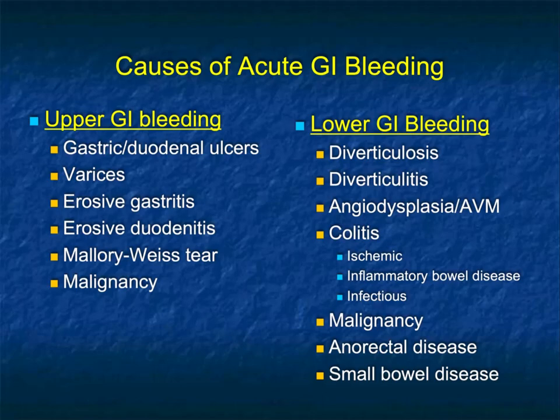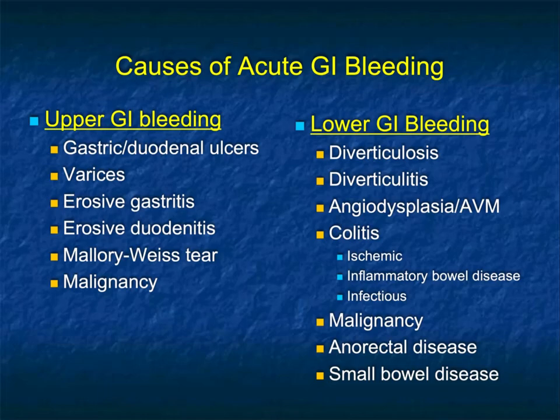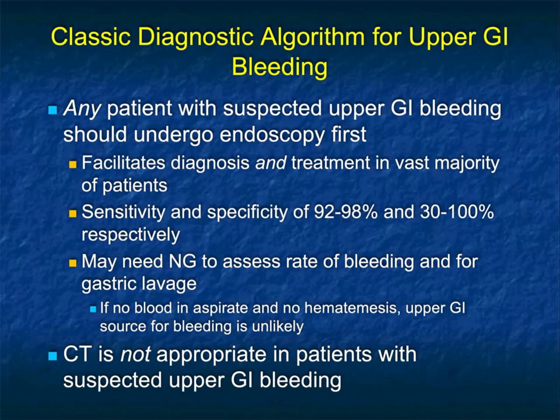When thinking about upper GI bleeding, causes include duodenal or gastric ulcers, varices, gastritis, duodenitis, the rare Mallory-Weiss tear, and malignancy in the duodenum, stomach, or near the GE junction. For lower GI bleeding, diverticular disease — diverticulosis and diverticulitis — tops the list, along with angiodysplasia, colitis due to ischemia, IBD or infection, malignancy such as small bowel or colon cancer, anorectal disease including fistulae or tumor, and small bowel disease.